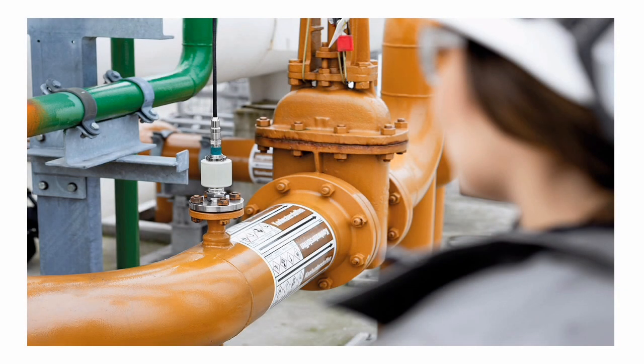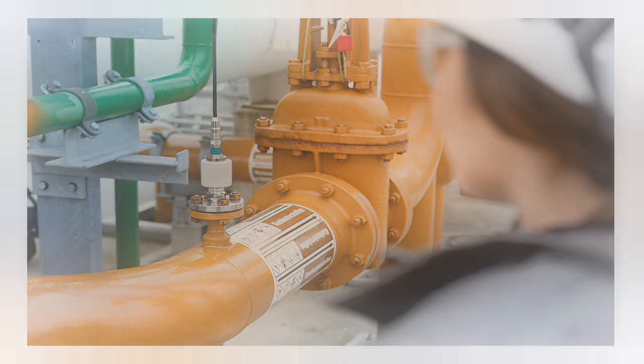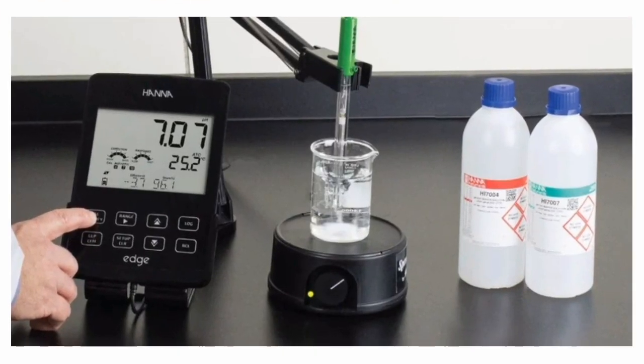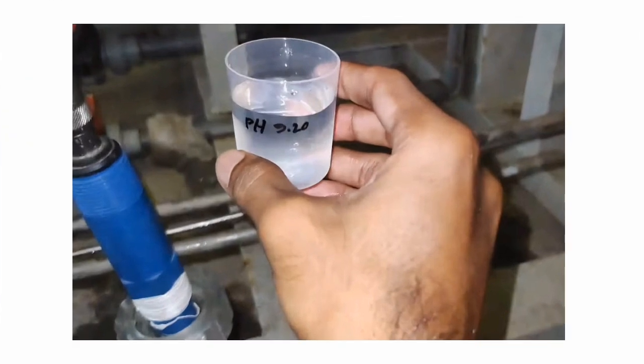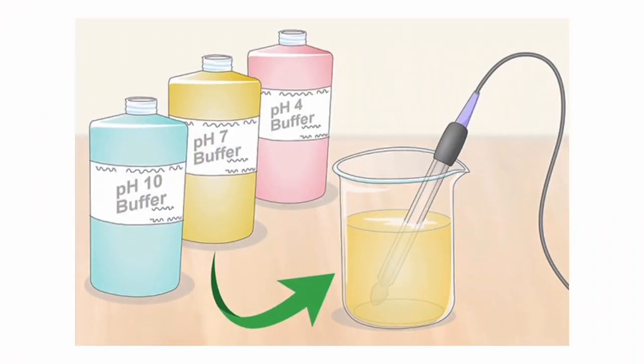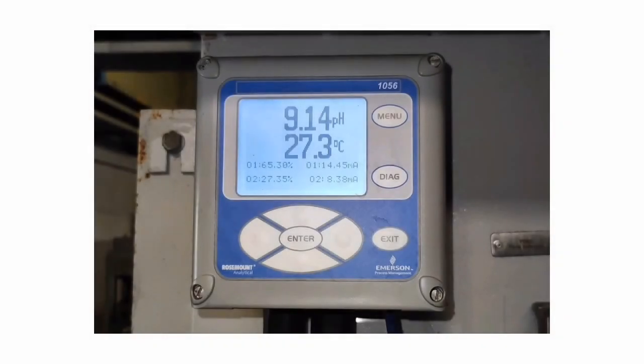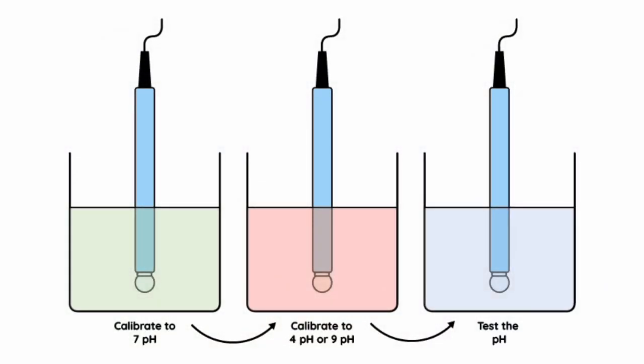The first buffer used for calibration is always the neutral buffer with a pH of 7. The second should always be near the expected sample pH, either 4 or 9.20. Bases should be measured with buffers with a pH of 9.20, while acidic samples should be measured with a pH of 4.